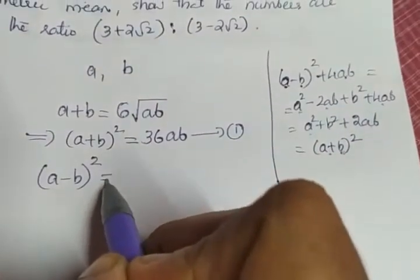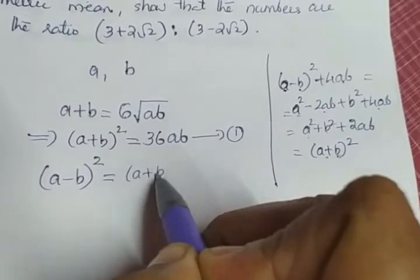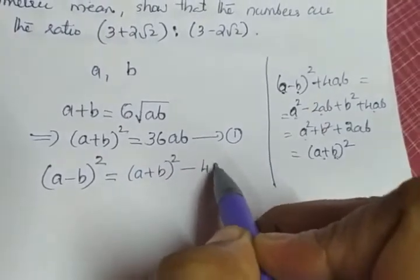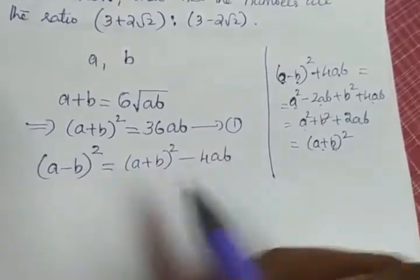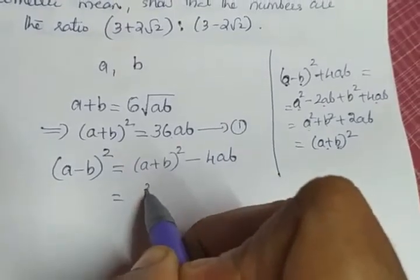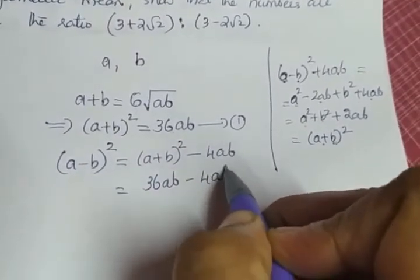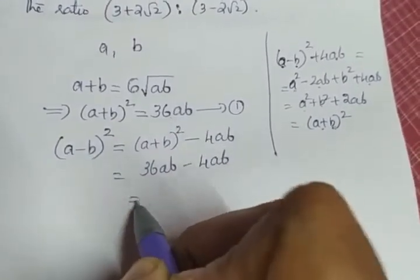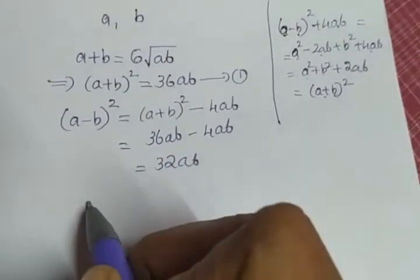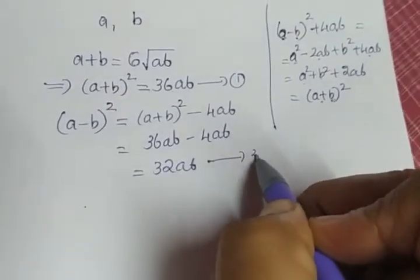That is what we are going to substitute here. A minus B the whole square is A plus B the whole square minus 4AB. A plus B the whole square, we know the value is 36AB. So, 36AB minus 4AB gives the value 32AB. Let this be equation number 2.